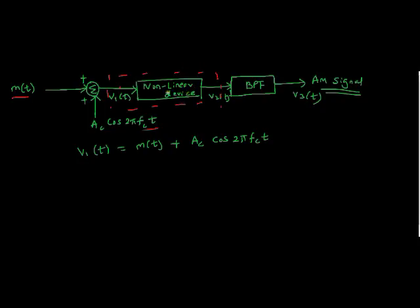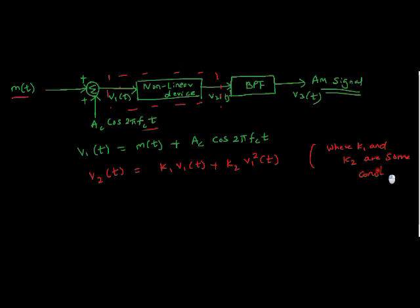Any nonlinear device characteristic is given by this plane. That is, my output of nonlinear device is equal to K1*V1(t) + K2*V1²(t), where K1 and K2 are some constants. This is my V2(t). We already have V1, so substitute this one in equation 2 wherever there is V1(t).